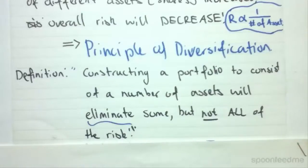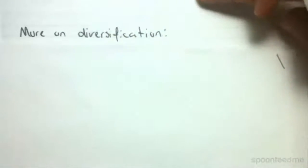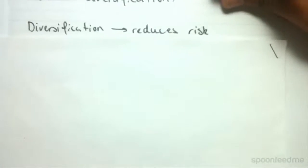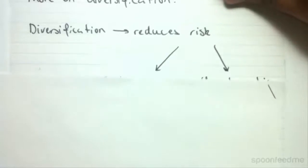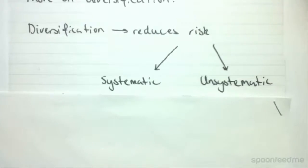So let's continue more on diversification. What we have is that diversification reduces risk, we know that much, but we also know that risk can be categorized into two subsets: systematic and unsystematic.